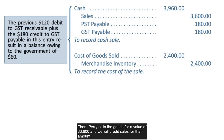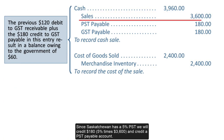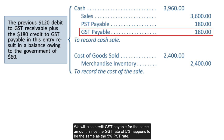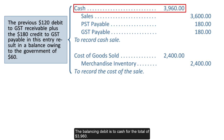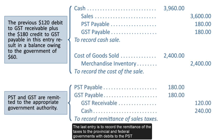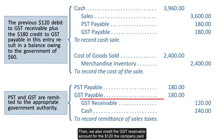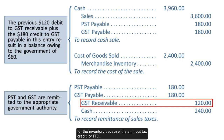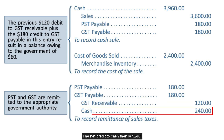Perry then sells the goods for $3,600 and credits sales for that amount. Since Saskatchewan has a 5% PST, a credit of $180 (5% × $3,600) is recorded to PST payable. GST payable is also credited for $180, since the GST rate of 5% equals the PST rate. The balancing debit is to cash for the total of $3,960. If this transaction were in Alberta, there would be no PST calculation. The last entry records the remittance of taxes to the provincial and federal governments, with debits to PST and GST payable accounts for $180 each. The GST receivable account is credited for the $120 paid on inventory as an input tax credit (ITC), resulting in net GST payable of only $60 ($180 charged less $120 paid). The net credit to cash is $240.